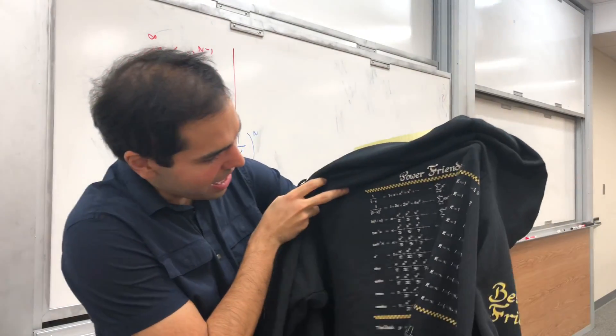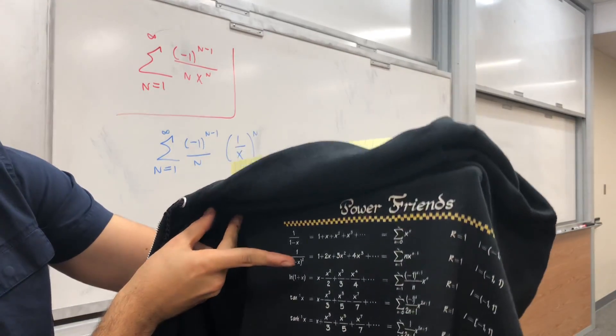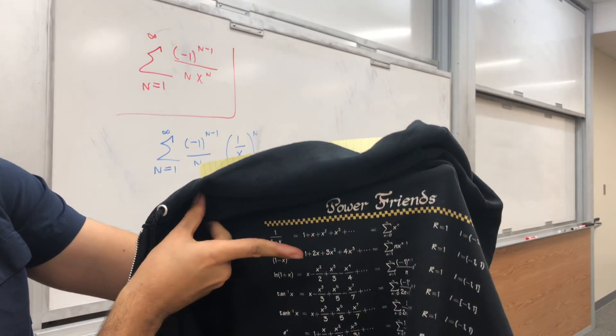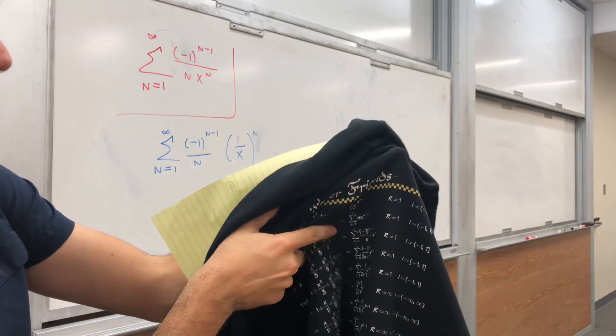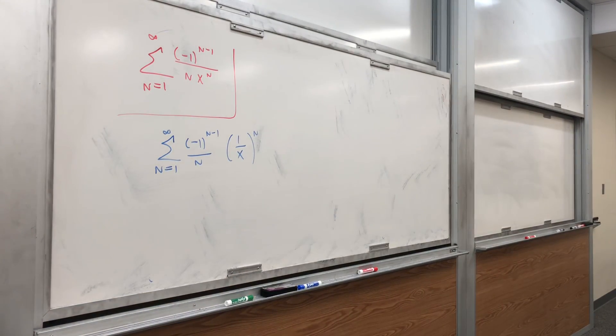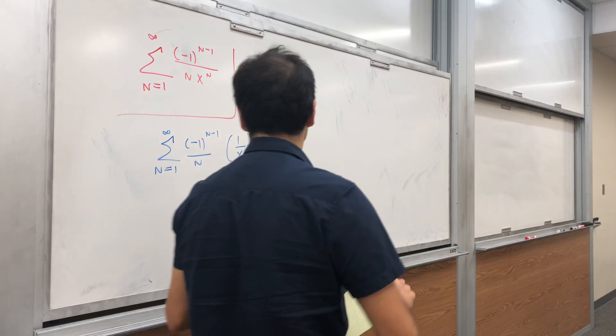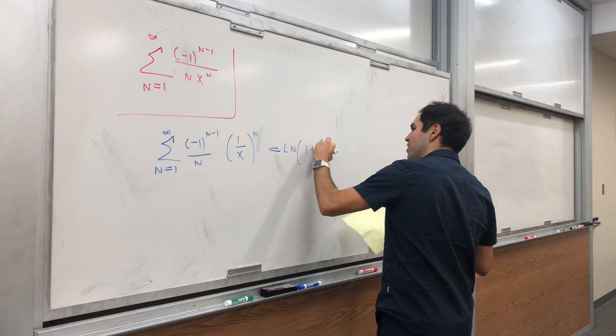you'll notice that it's the same as, in fact, the ln(1 + x) series, except we have a 1 over x. So ln(1 + x) is that series with x to the n, so in particular ln(1 + 1/x) is that series. That's ln(1 + 1/x).